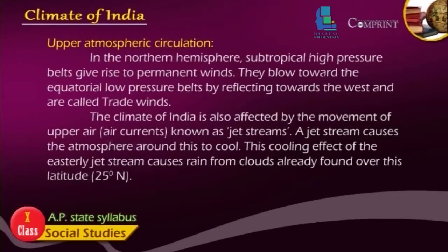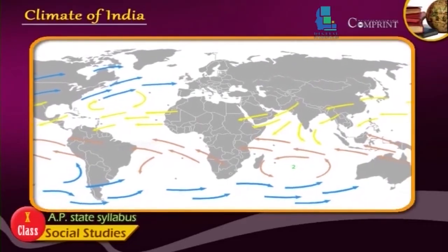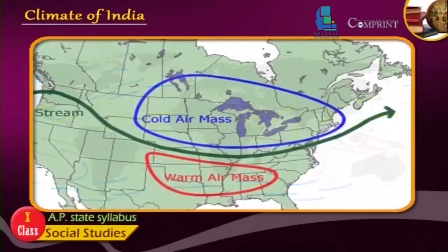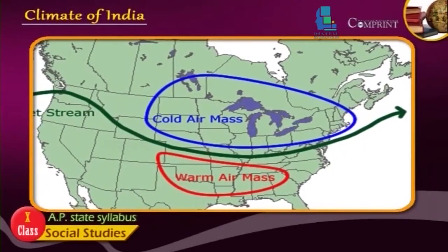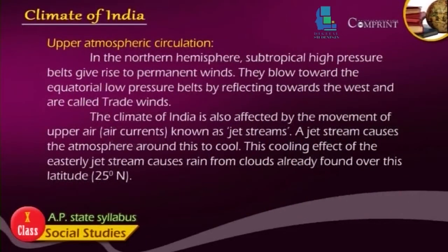In the northern hemisphere, subtropical high pressure belts give rise to permanent winds. They blow towards the equatorial low pressure belts, deflecting towards the west, and are called trade winds. The climate of India is also affected by the movement of upper air currents known as jet streams. A jet stream causes the atmosphere around it to cool.